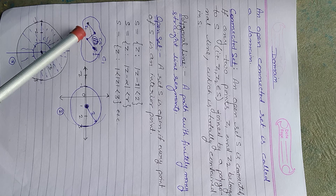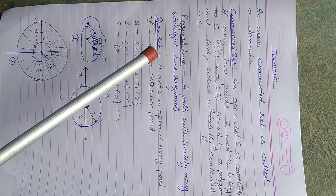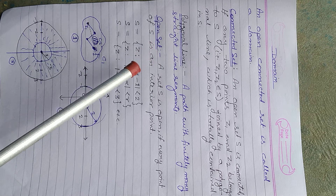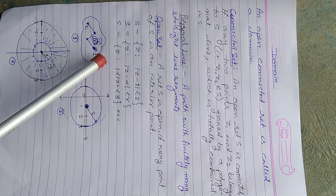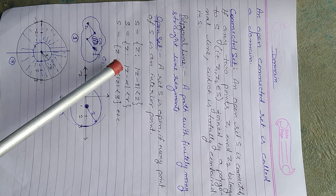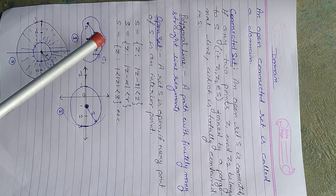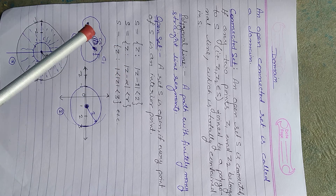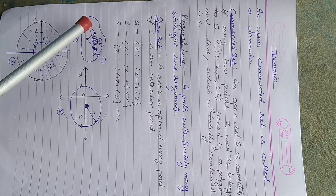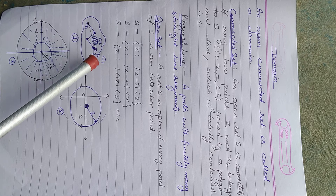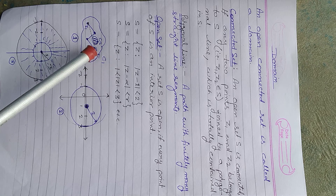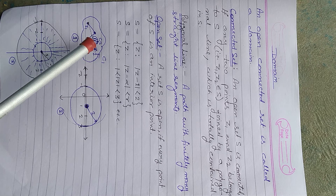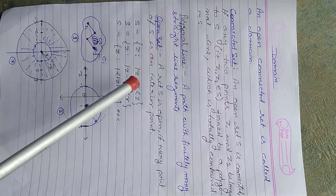So if all the polygonal lines are contained inside the set S — if all the lines joining z1 to z2 are inside the set S — then the set is known as a connected set.